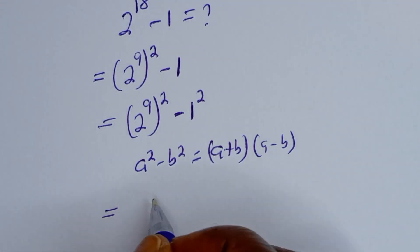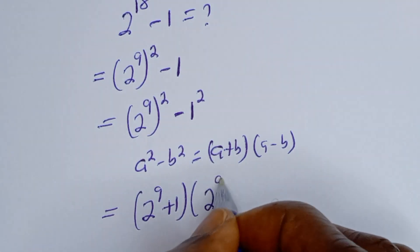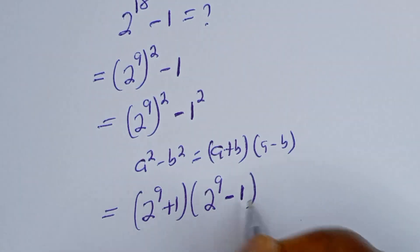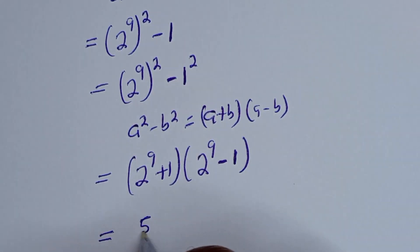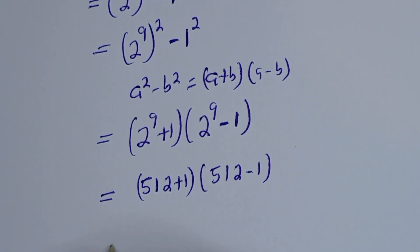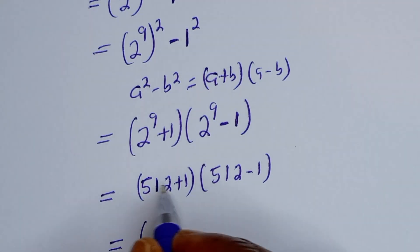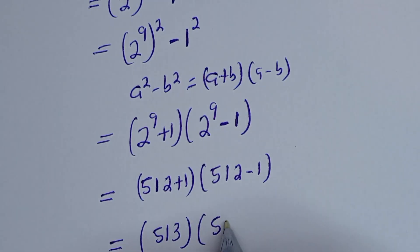Now, here it is equal to 2 to the power of 9 plus 1, bracket 2 to the power of 9 minus 1. Equal to 2 to the power of 9, which is 512, plus 1, bracket 512 minus 1. Then this is equal to 512 plus 1, that is 513, bracket 511.